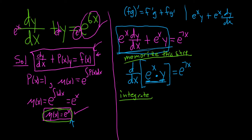I'll just write 'integrate' rather than putting the integral symbol here, because then I'd need a dx and there's no room. When you integrate the derivative it goes away on the left, and on the right you integrate e to the 7x — you just divide by 7 — and then add C.